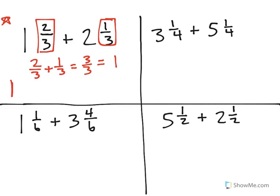Now what I have is the one whole from those fractions plus this one whole plus 2. So when I add 1 plus 1 plus 2, I get a total of 4.